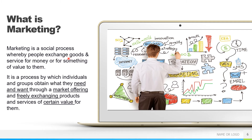Marketing is a social process — it's a process where different members of society are involved. The person selling the goods and the people buying the goods are all part of this society. People exchange goods and services for money. It is also defined as a process by which individuals and groups obtain what they need and want through a market offering, freely exchanging products and services of certain value.